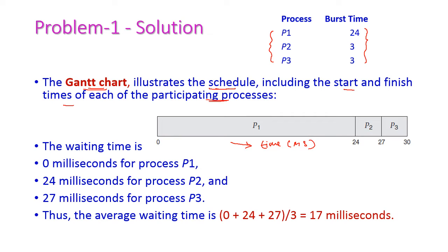Which is the first process? First process is P1 with burst time 24. So the first 24 milliseconds, process P1 will occupy. After that P2 will come; the burst time of P2 is 3, so P2 will start at 24 and finish at 27 — 24 plus 3 equals 27. After that P3 will start; the starting time of P3 is 27 and finishing time is 27 plus 3, which is equal to 30. So to complete all 3 processes the CPU will take 30 milliseconds.